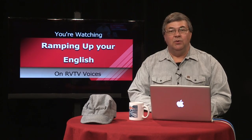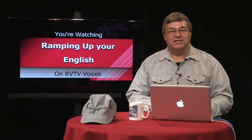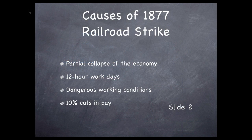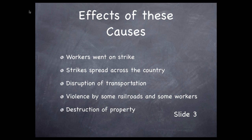Labor history is complex, and so is the cause-effect relationship we're describing today. We'll use English in a way that communicates a cause-effect relationship while avoiding being simplistic. This is an example of what's called multiple causation, meaning there's more than one cause. Partial collapse of the economy, 12-hour workdays, dangerous working conditions, and a 10% cut in pay — these are all causes of the Great Railroad Strike of 1877. The effects associated with these causes are also not simple: railroad workers went on strike, strikes spread across the country, there was disruption of transportation and violence by some railroads and some workers, as well as destruction of property.